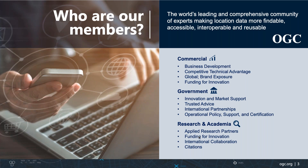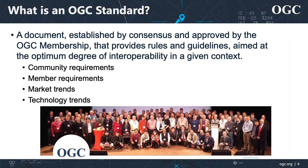The member organizations come from the commercial, government, research, and academic sectors. The reasons that draw those organizations to OGC include business development, brand exposure, innovation and market support, growth of international collaborations, as well as international partnerships. There are several reasons why organizations participate in OGC's consensus-based process. What we do is develop and publish geospatial standards — a document established by consensus and approved by the OGC membership that provides rules and guidelines aimed at optimizing the degree of interoperability within a given context.